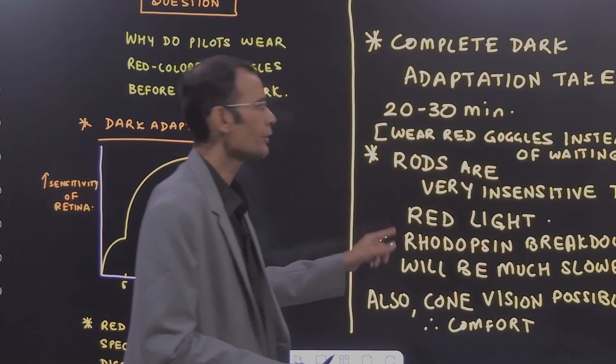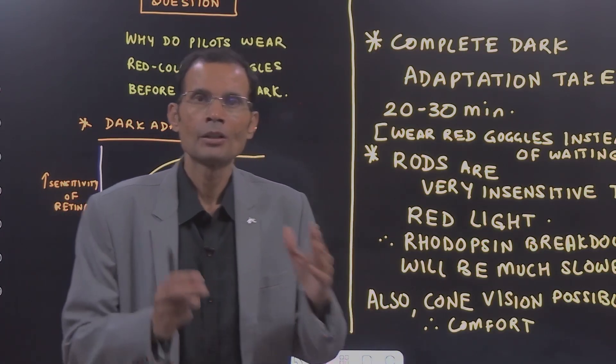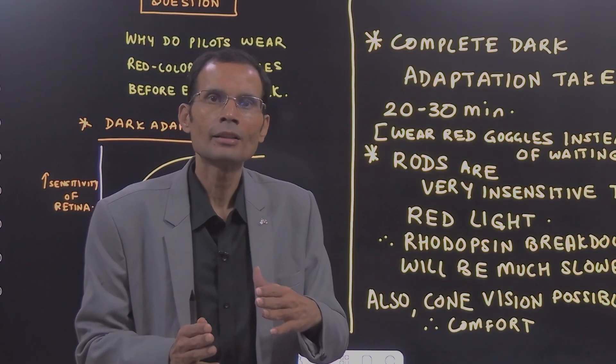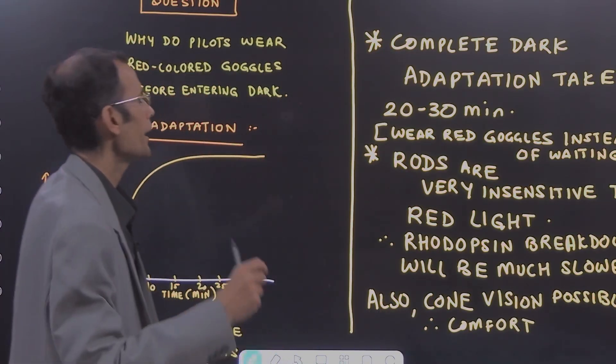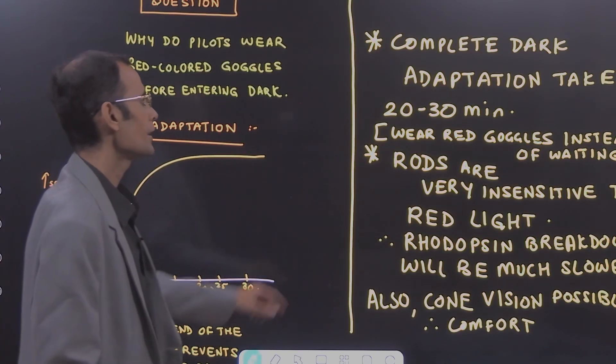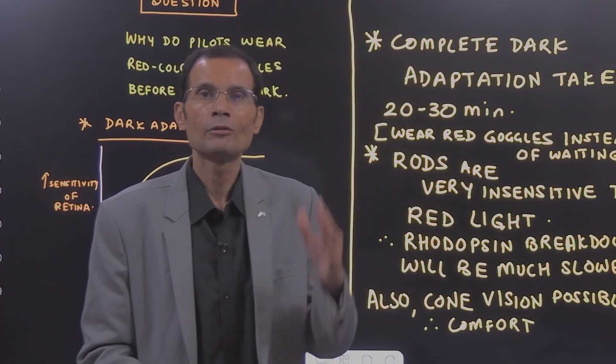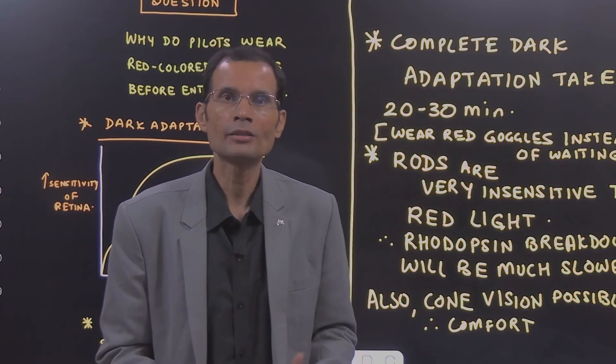Rods are very insensitive to the red light. On the red side of the spectrum, rods are less sensitive or very insensitive. It means what?